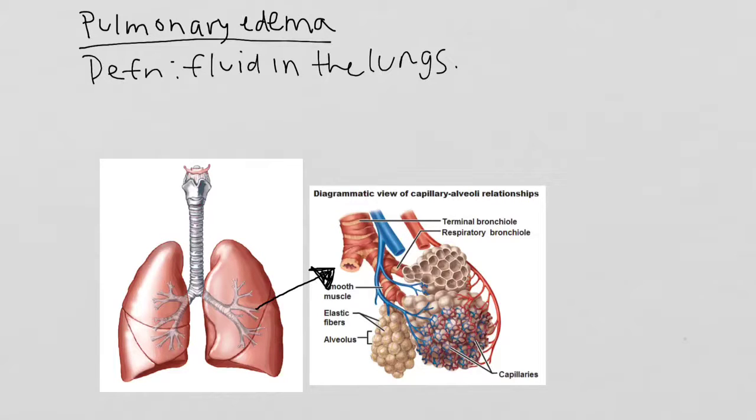So let's look. If you follow my pointer, here's our trachea, and it goes down to the two bronchi. There's one bronchi, two bronchi, and it further branches down to the bronchioles. You see the bronchioles, these four right there, right there, right there.